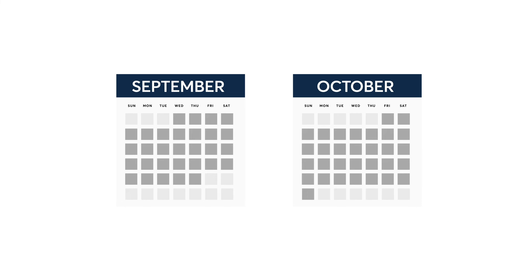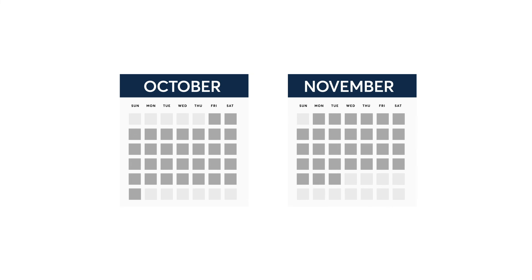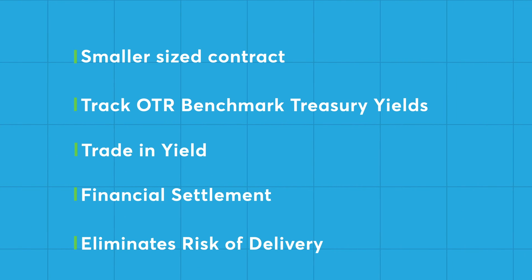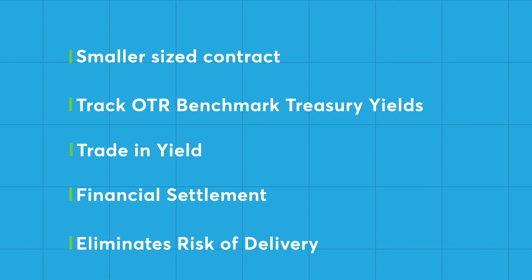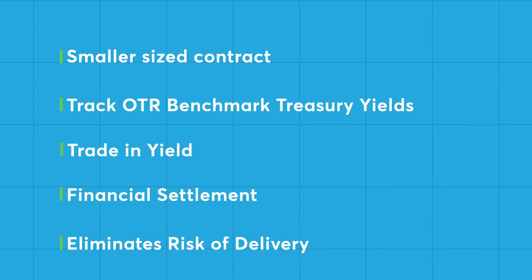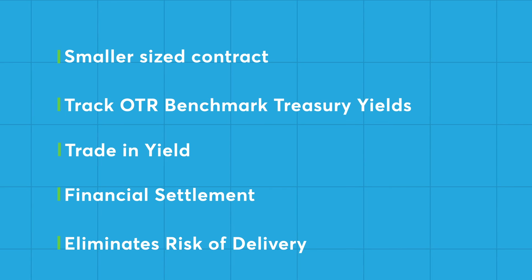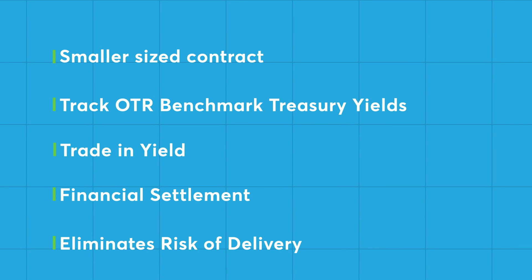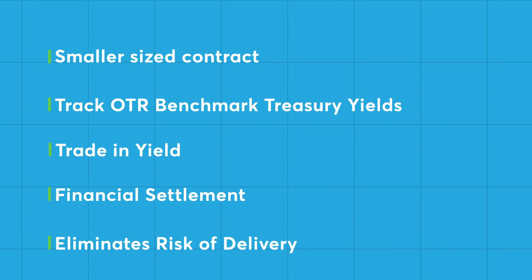At any given time, the nearest two monthly contracts will be listed. For example, in early September, the September and October contracts will be available. On the last business day of September, the September futures expire and the November contract will be listed. Features of Yield Futures include their smaller size, they track OTR benchmark Treasury yields, they trade in yield rather than price terms, and are financially settled, which eliminates any delivery risk.